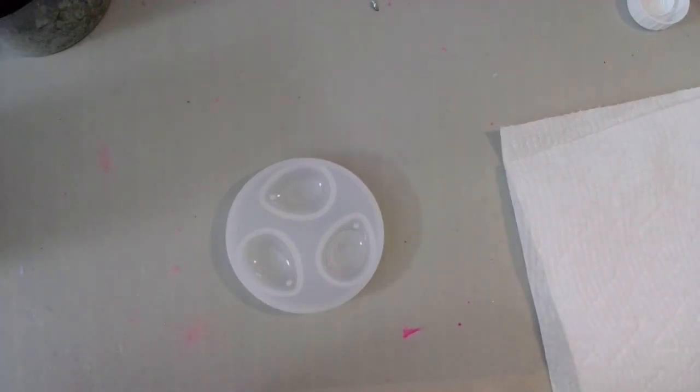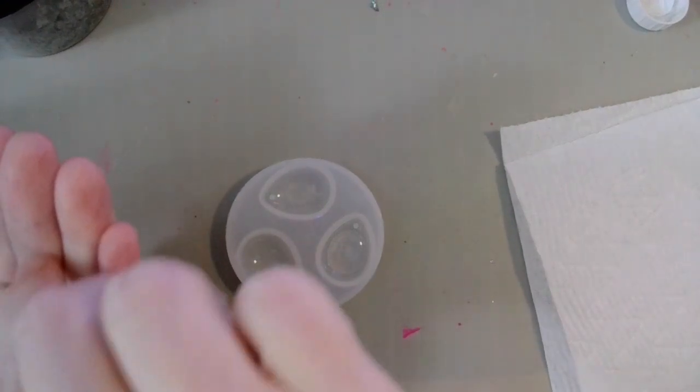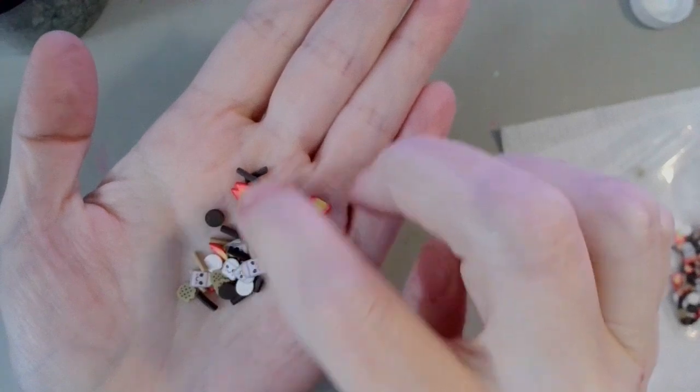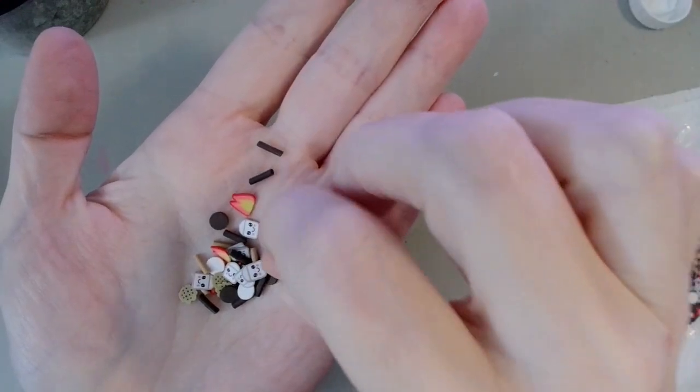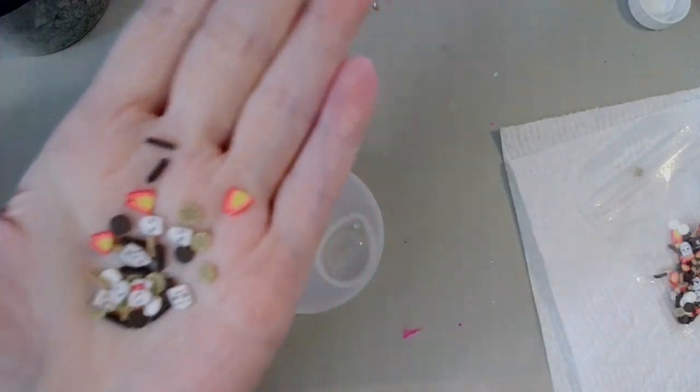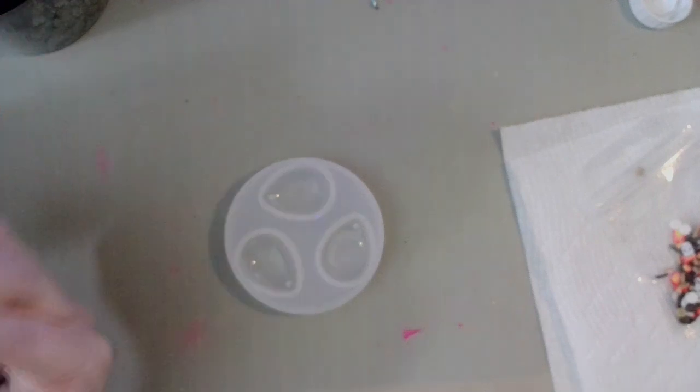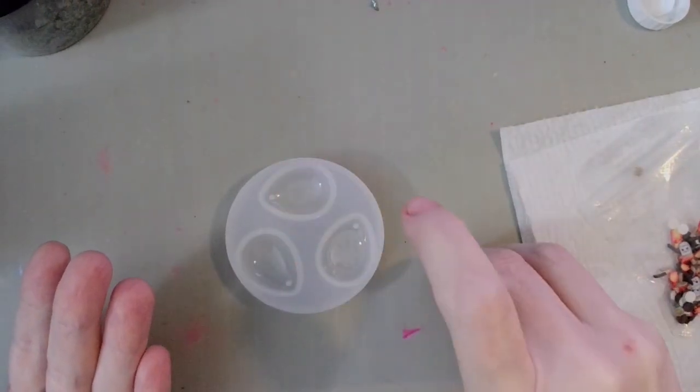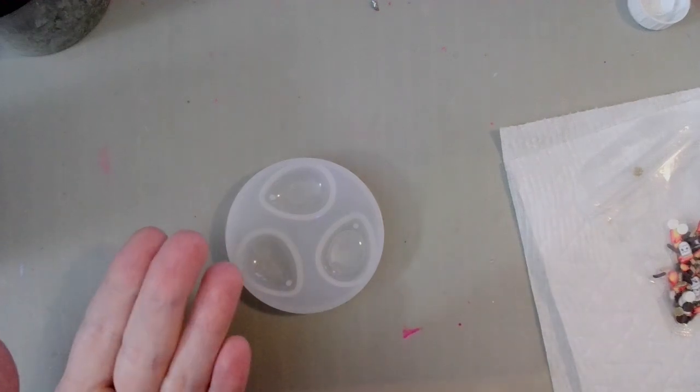These little guys are so super precious. Let me show you what's in here. It's got little campfire flames, little marshmallows with smiley faces, little pieces of graham cracker and little pieces of chocolate. I just think they're super cute. So this is what I'm going to use. I'm going to just hit this for a couple of seconds with my UV light just to tack it up a little bit, but not enough to really cure it, and go in with my first layer.